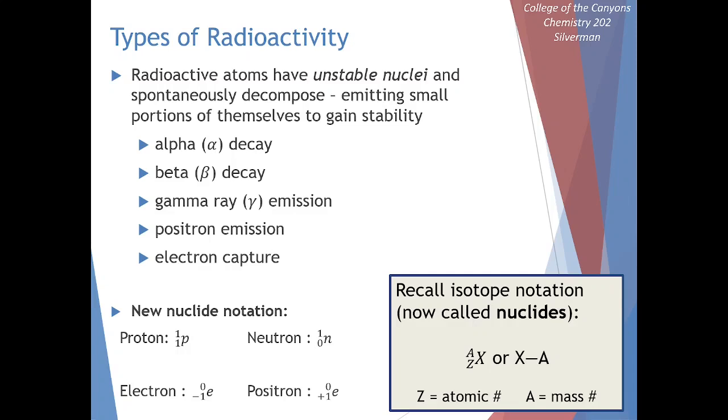With that background and motivation, we can get into some of the details. There are a few key types of radioactive processes that we want to go into the details of. We can talk about alpha decay, beta decay, gamma ray emission, positron emission, and electron capture. For our radioactive processes, we have unstable nuclei that will spontaneously undergo these decomposition reactions, changing the structure of those nuclei.